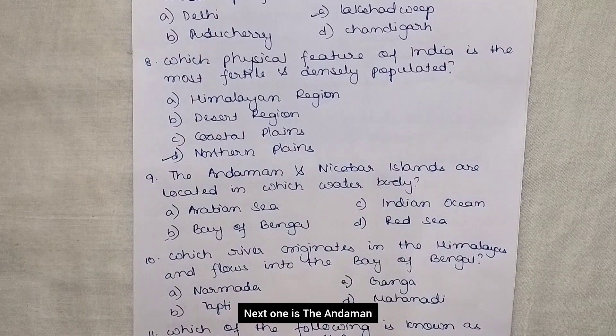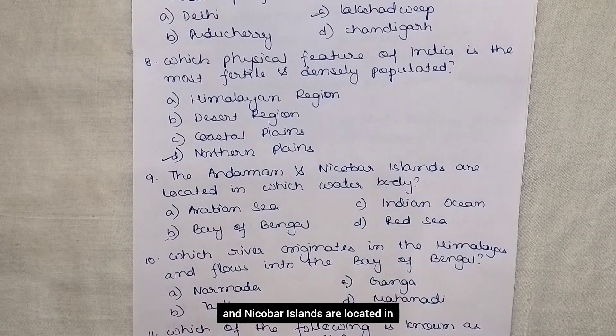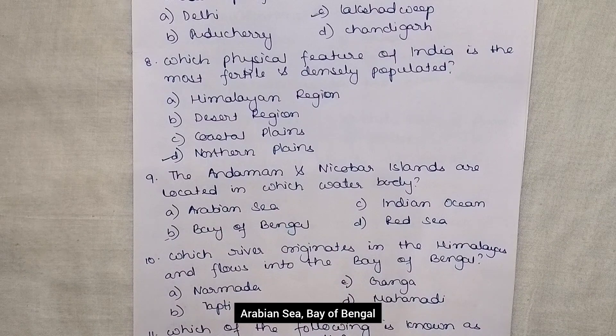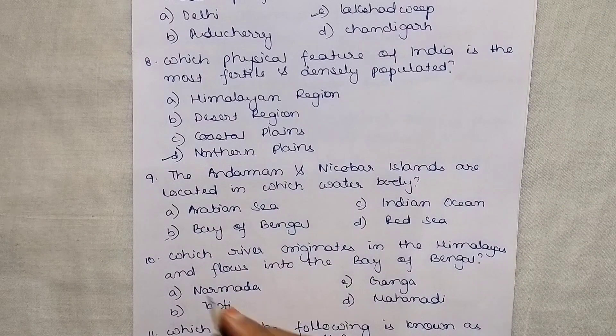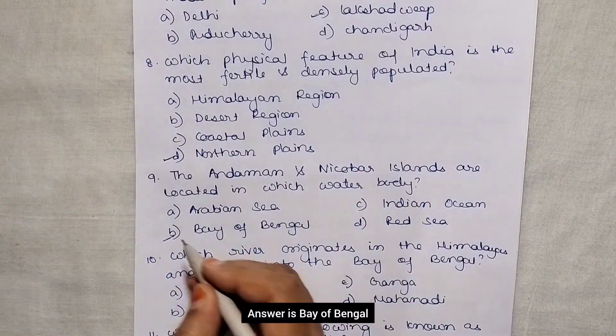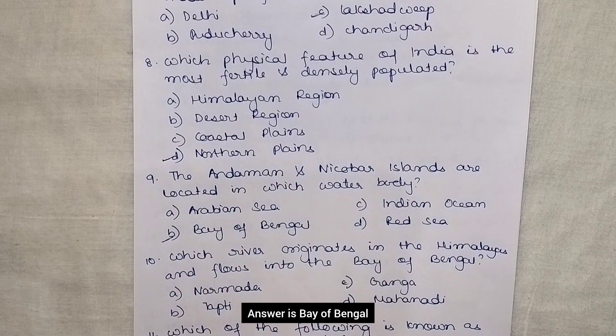The Andaman and Nicobar Islands are located in which water body? The options are Arabian Sea, Bay of Bengal, Indian Ocean, or Red Sea. Answer is Bay of Bengal.